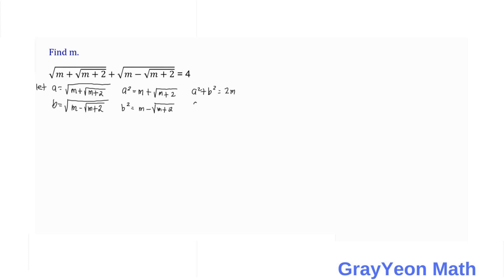Based on the given, we know that a plus b is equal to 4. So the next step is to apply the binomial expansion formula: a plus b squared is equal to a squared plus b squared plus 2ab.